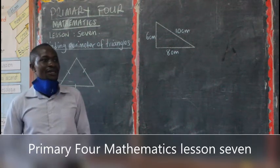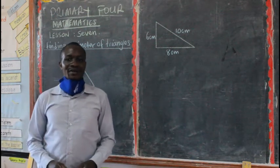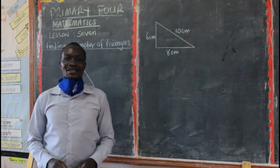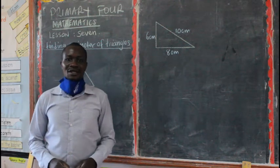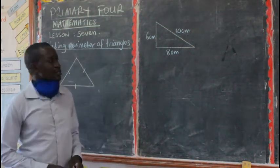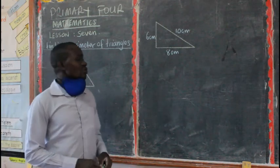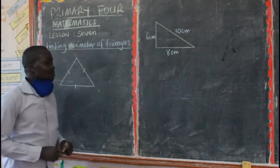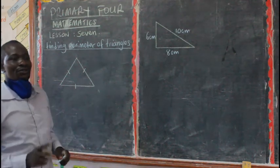Perimeter of squares, and to remind ourselves we say that perimeter is the distance around the figure. Perimeter is the distance around the figure. So today we are still continuing with the perimeter. We are going to look at perimeter of triangles.